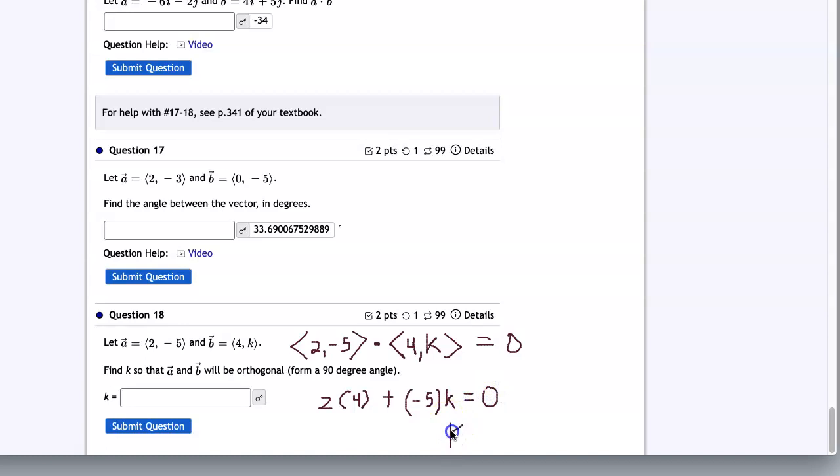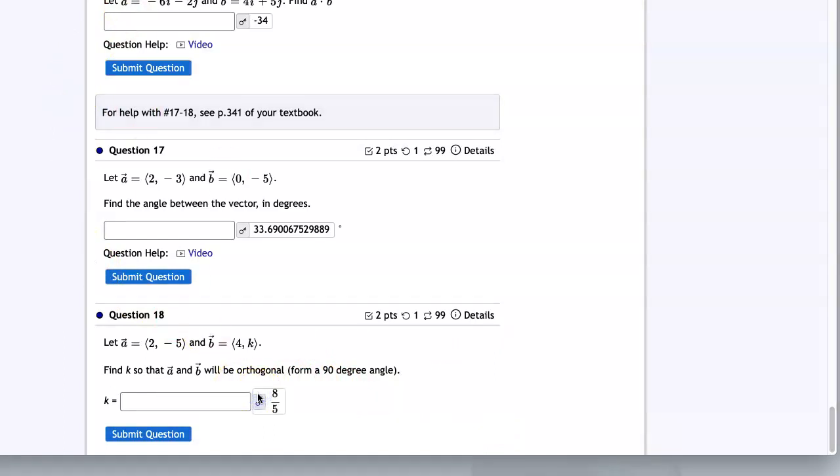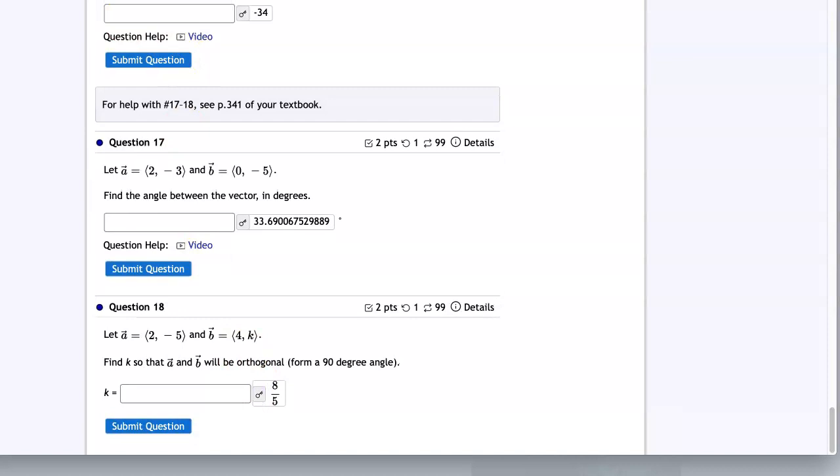And so then you can see that k would end up being eight over five or 1.6, depending on how this is typed in. There you go. And that's your problem set.